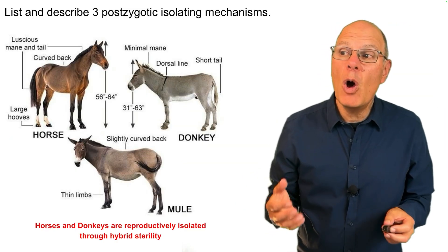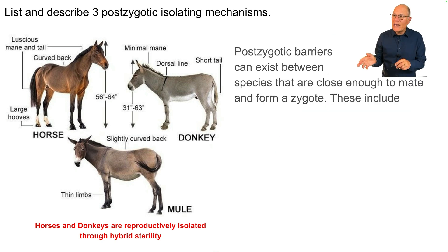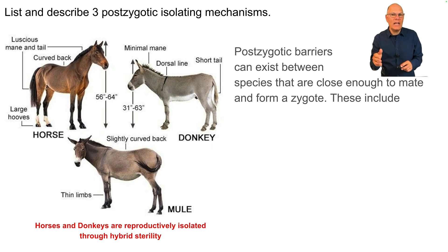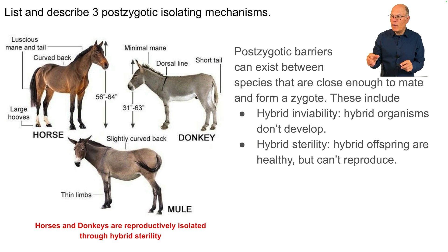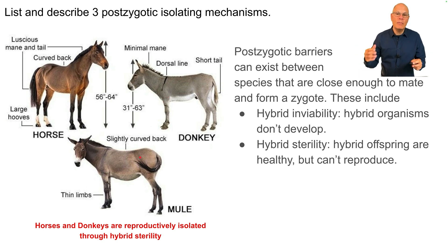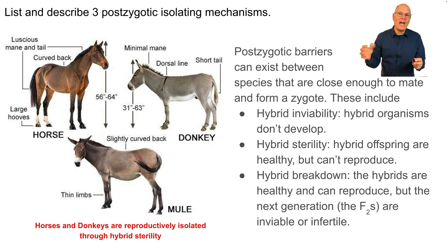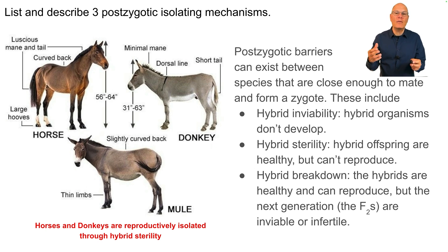Post-zygotic barriers can exist between species that are close enough to mate and form a zygote, but their gene pools remain separate. These include hybrid inviability, where the hybrid organisms don't develop; hybrid sterility, where the hybrid offspring are healthy but can't reproduce — as happens between horses and donkeys, which can interbreed to produce mules, but mules themselves are sterile; and finally hybrid breakdown, where hybrids are healthy and can reproduce, but the next generation, the F2s, are inviable or infertile.